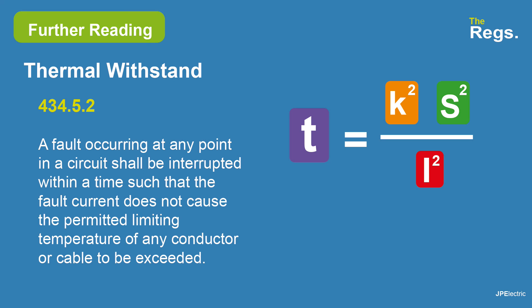So the adiabatic equation gives us the size of the protective conductor that we need. There's also another calculation we need to do: we need to know that the fault is interrupted within a time such that the fault current does not cause the permitted limiting temperature of any conductor or cable to be exceeded — how quickly that cable will get to a limiting temperature. We'll do that equation in another video. I hope that was of some use to you — thanks very much for watching.